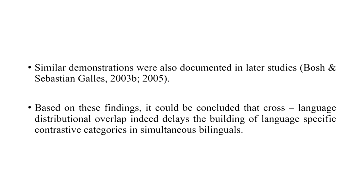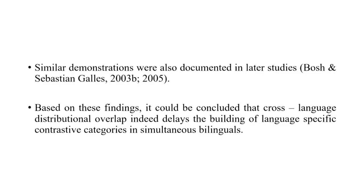They concluded that due to simultaneous exposure to both Catalan and Spanish, these infants may have initially developed a single phonemic category for the two vowel sounds and hence initially failed to distinguish between them. However, gradually, as the ability to perceive contrasts improves and they become better at processing language-specific input, they get this ability back — albeit with a delay of a few months. This tells us how mixing of two languages since birth impacts the development of phonemic perception in children.